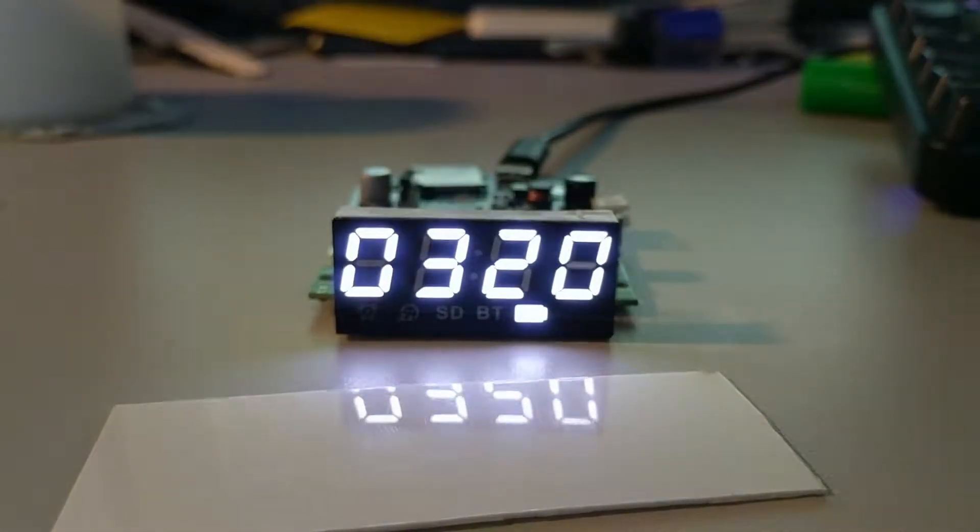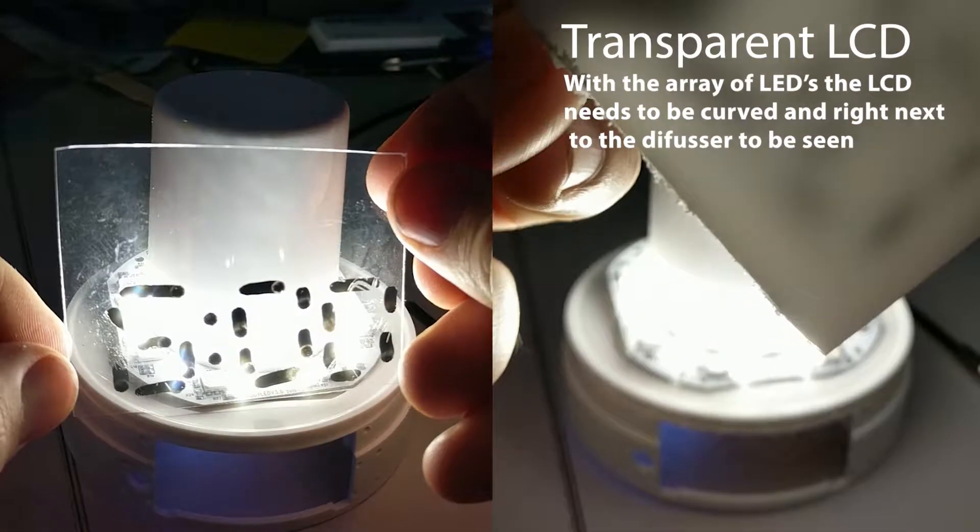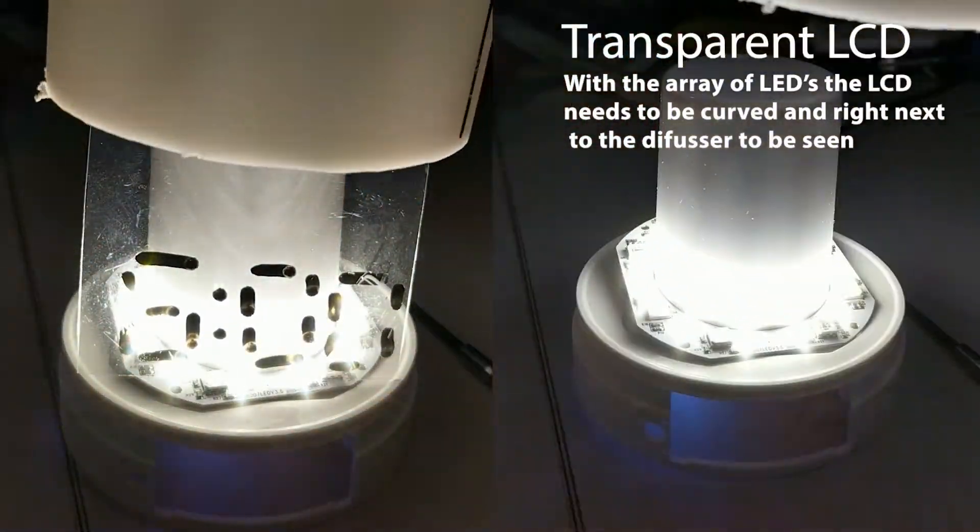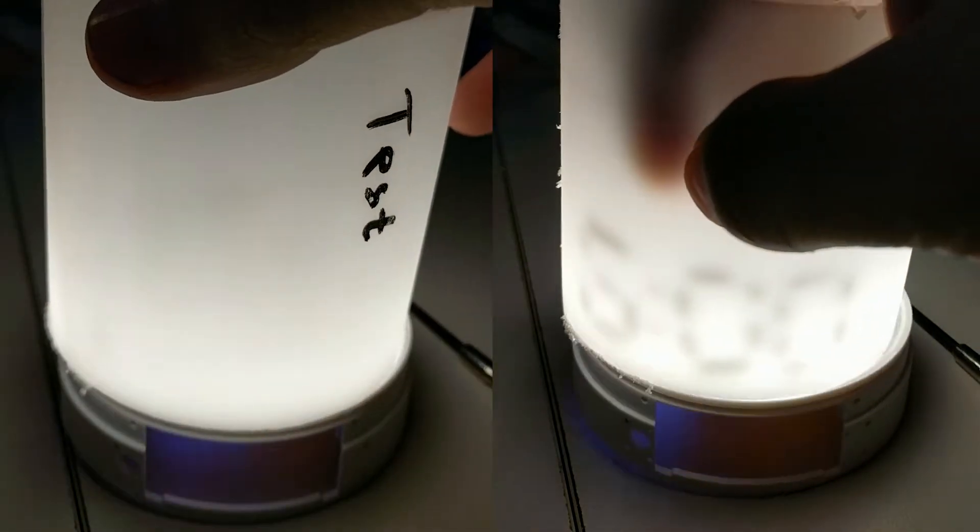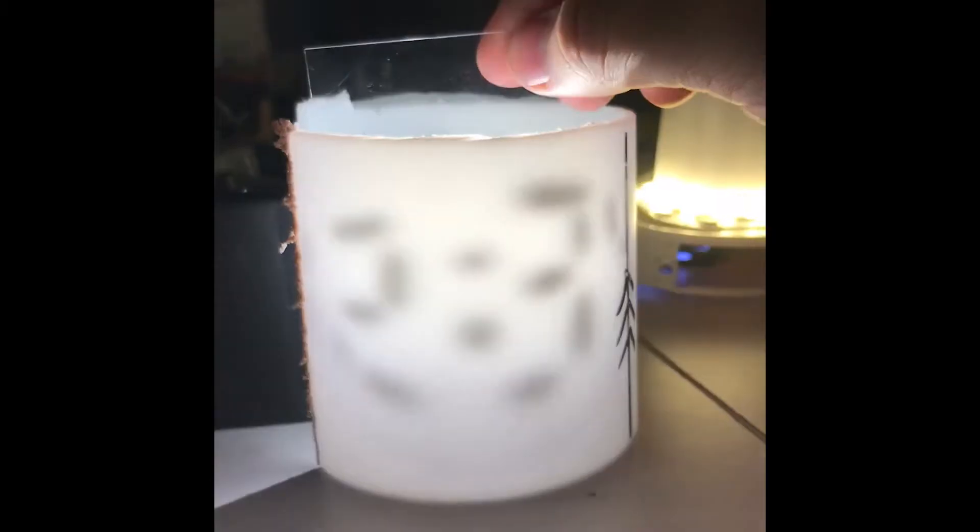Testing a transparent LCD showed that the LCD had to be curved and in contact with the diffusive material if the backlight is diffuse. Using the LCD and a point light source was effective at displaying the time but showed harsh shadows on the subtle light of the diffuser.